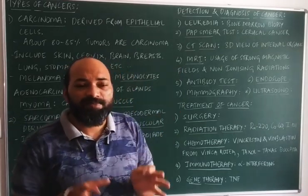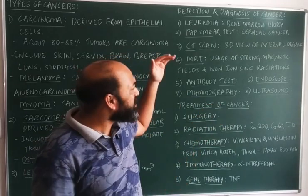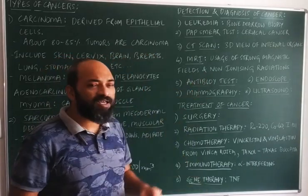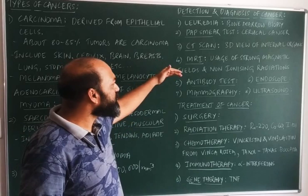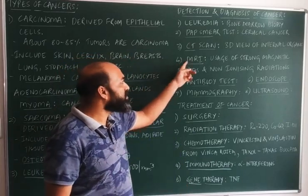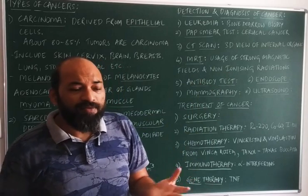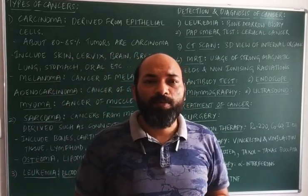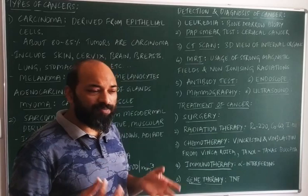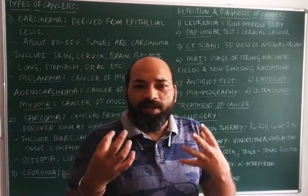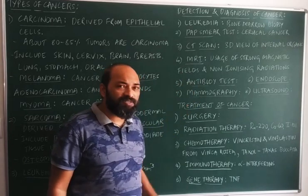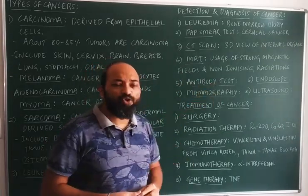MRI scan — magnetic resonance imaging — uses strong magnetic fields along with non-ionizing radiations to analyze the internal presence of a tumor inside the body. MRI scan is also used for ligament tear problems. Additionally, an antibody test can be used, because when a cancer cell is formed, the immune system may produce antibodies against it, and based on that we can identify whether a person is suffering from cancer.